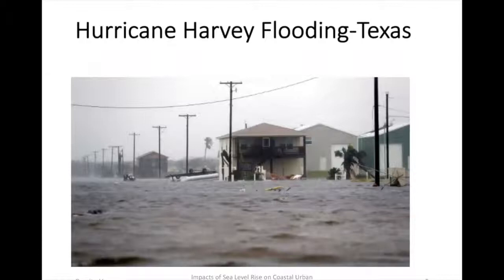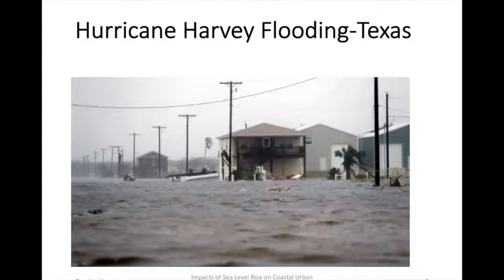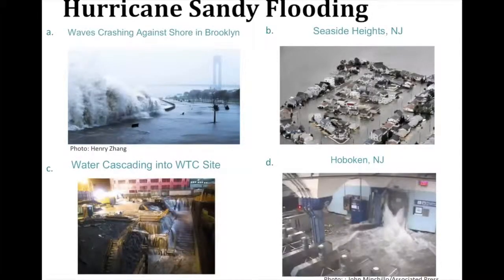One major consequence of rising sea level is flooding due to severe coastal storms. Here you see the flooding after Hurricane Harvey in large parts of Texas. Not all of this was due to coastal storm surge — much was also due to the torrential downpours during that particular hurricane. These severe storms can also generate high water and wave action that can lead to coastal erosion and shoreline retreat.